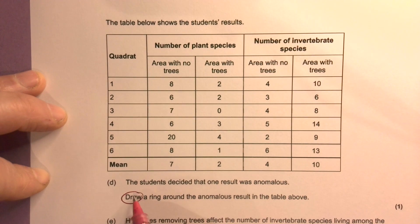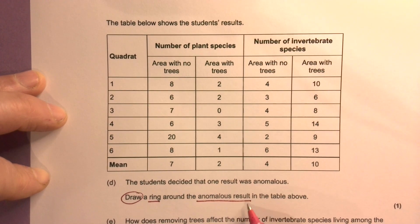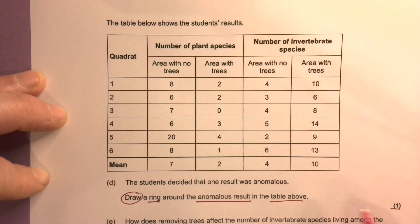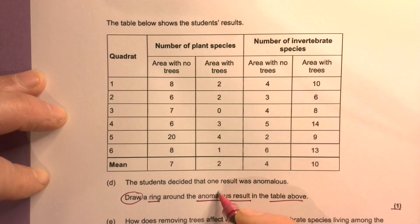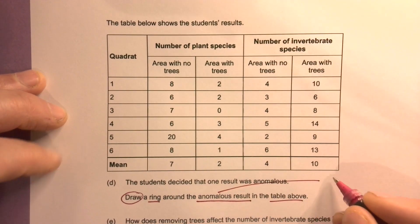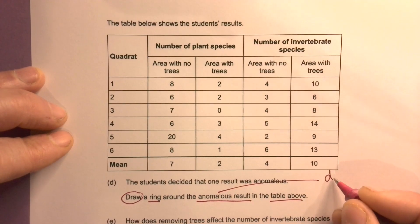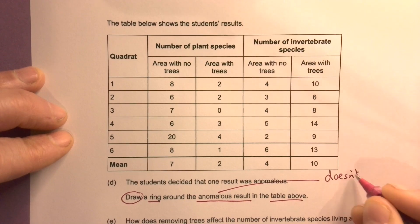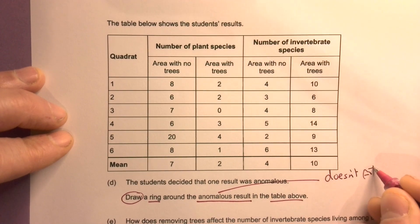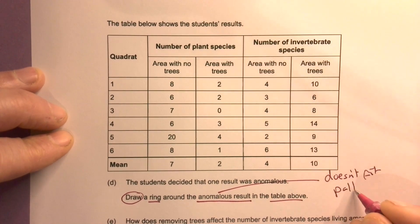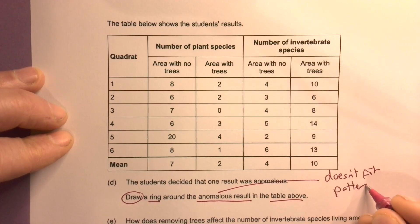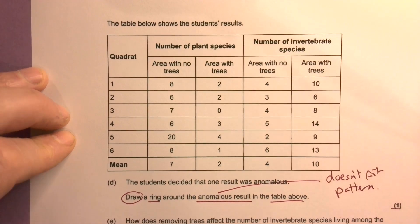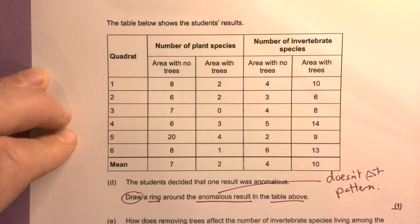Draw a ring around the anomalous result in the table above — worth one mark. Anomalous just means it doesn't fit the pattern, and it can be any pattern you like.